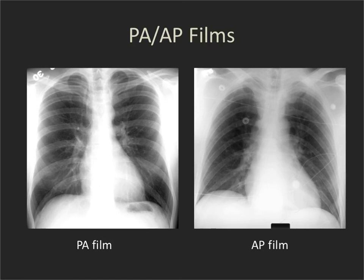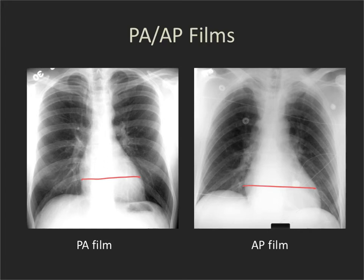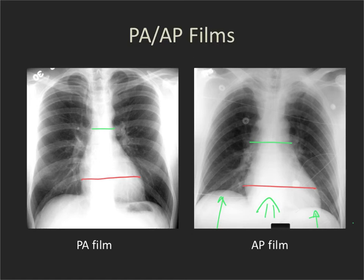These two studies — PA and AP — were done within an hour of each other. The PA was done upright standing, and the AP was done with the patient sitting up on a stretcher in the department. First, the heart looks larger on the AP study from that magnification, so we allow a cardiothoracic ratio up to 0.6 rather than 0.5. The whole mediastinum also looks larger — partly the AP effect, but also because sitting up prevents a full inspiration, which squishes the mediastinum and makes it look wider.